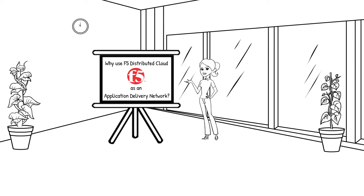By the end of this video, you will have a better understanding of how F5 distributed cloud services creates a consistent console for networking and application configurations across clouds, ease of connectivity between clouds and on-prem data centers, speed, and team collaboration by using a simple approach and what that can do for you and your organization.